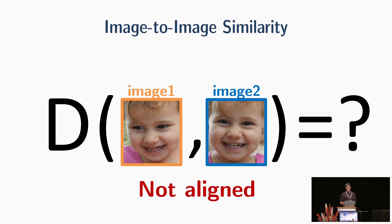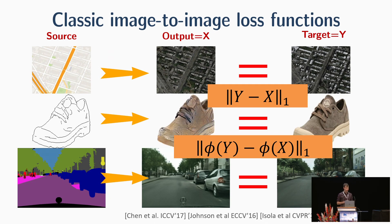Classic loss functions such as L1, L2, or the perceptual loss assume pixel-to-pixel correspondence. This narrowed the general task of image transformation to setups with aligned data, such as map-to-image, edges-to-shoes, etc.